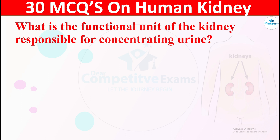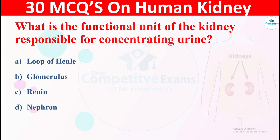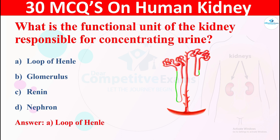Question 7: What is the functional unit of the kidney that is responsible for concentrating urine? The options are: A) loop of Henle, B) glomerulus, C) renin, or D) nephron. The correct answer is loop of Henle. The loop of Henle plays a crucial role in concentrating urine.